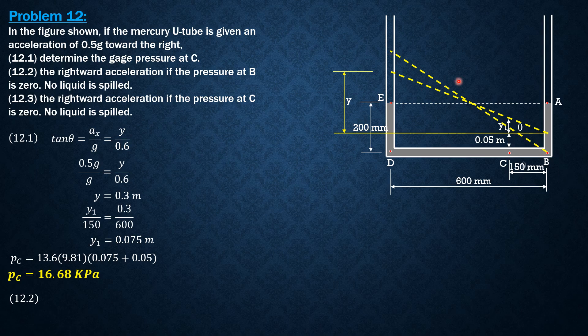This should be the imaginary surface of zero pressure. Call that theta 1, and this is 0.4. 0.4 is 0.2 plus the lowering of the leg here to B, 0.2, so it will rise here by 0.2, that makes it 0.4. Tangent theta 1 equals AX over G, 9.1 equals 0.4 over 0.6 meter. Solving for AX, AX is 6.54 meters per second square.